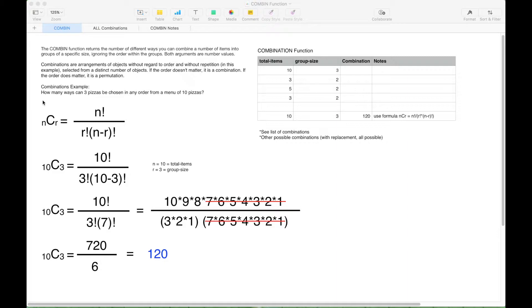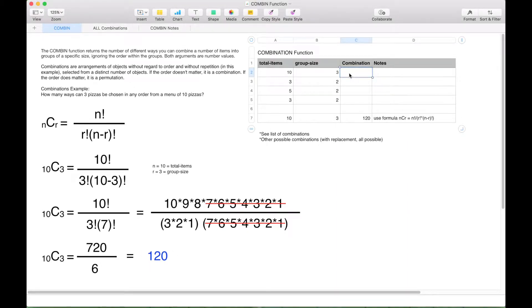So the answer to the question, how many ways can three pizzas be chosen in any order from a menu of ten pizzas is 120. Now let's go ahead and use our spreadsheet function to see if we get the same answer.